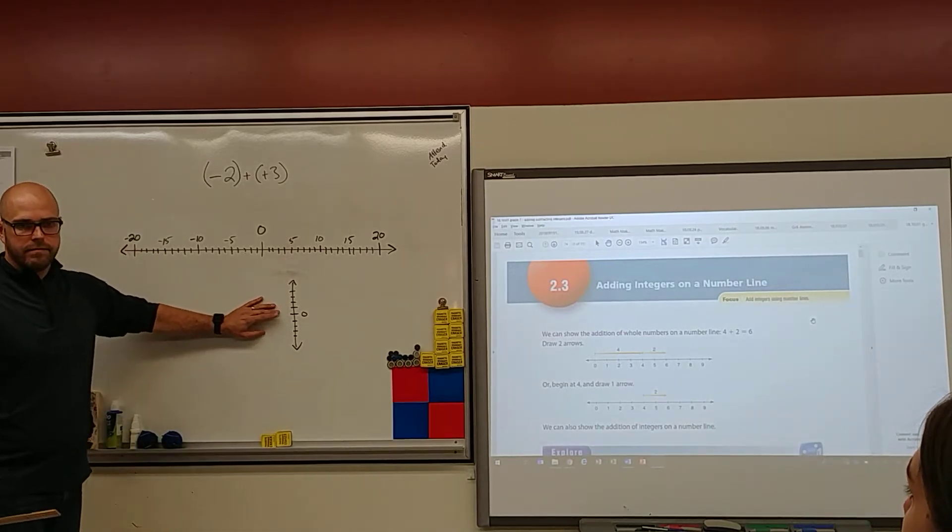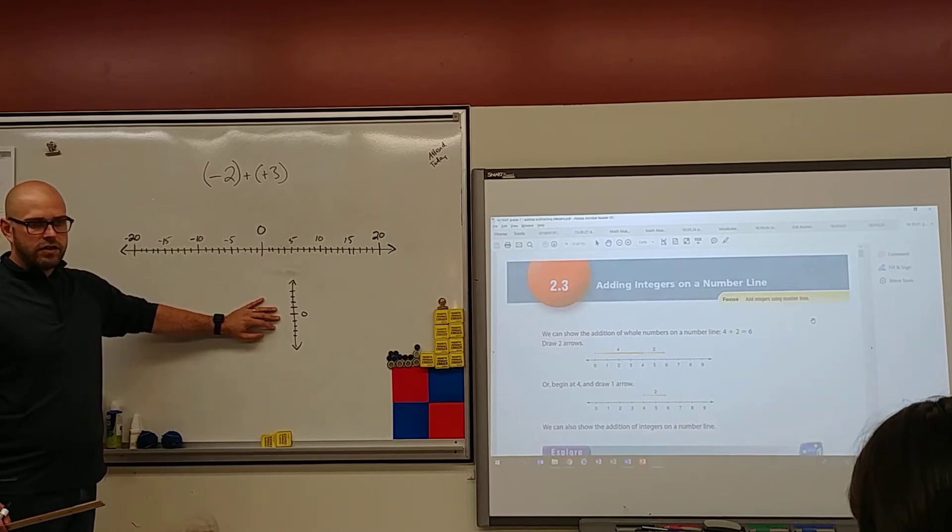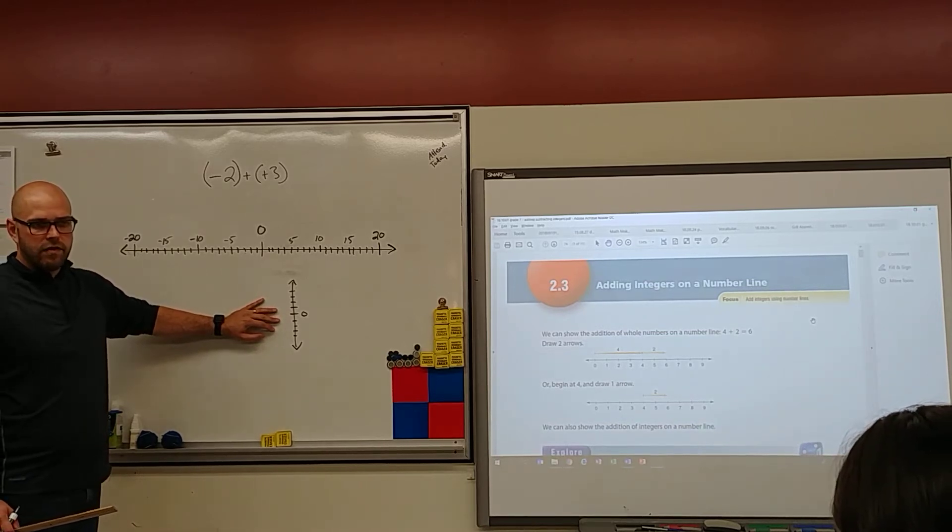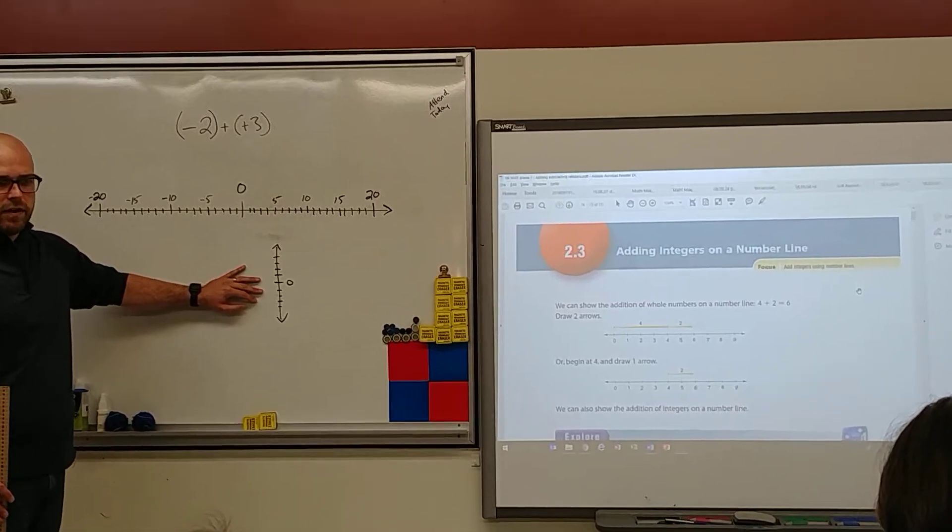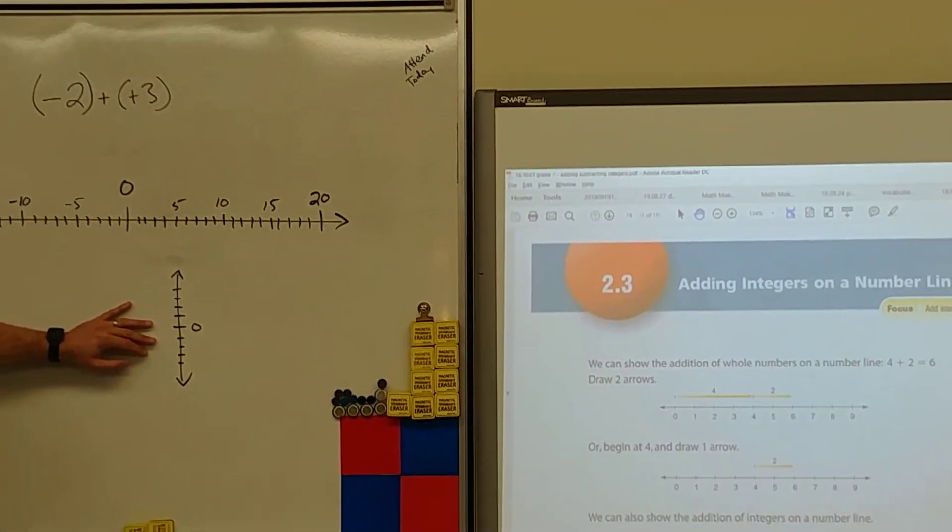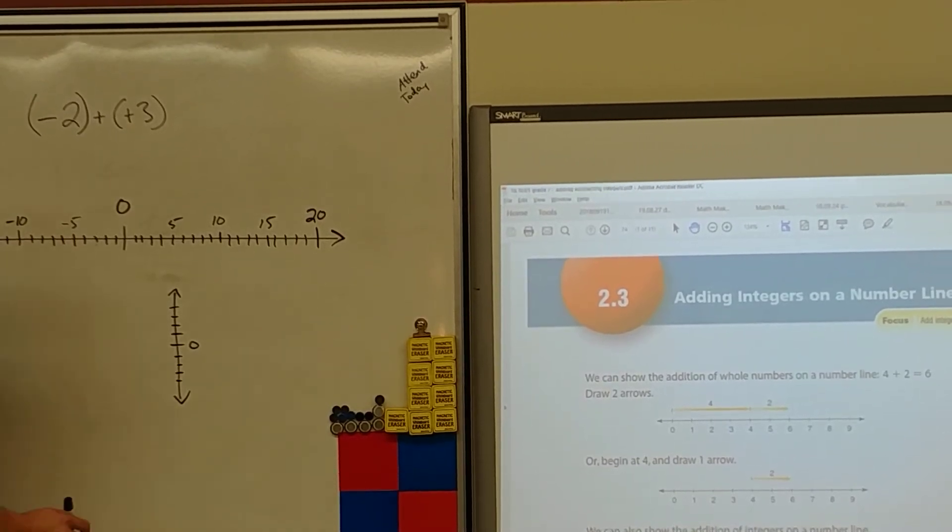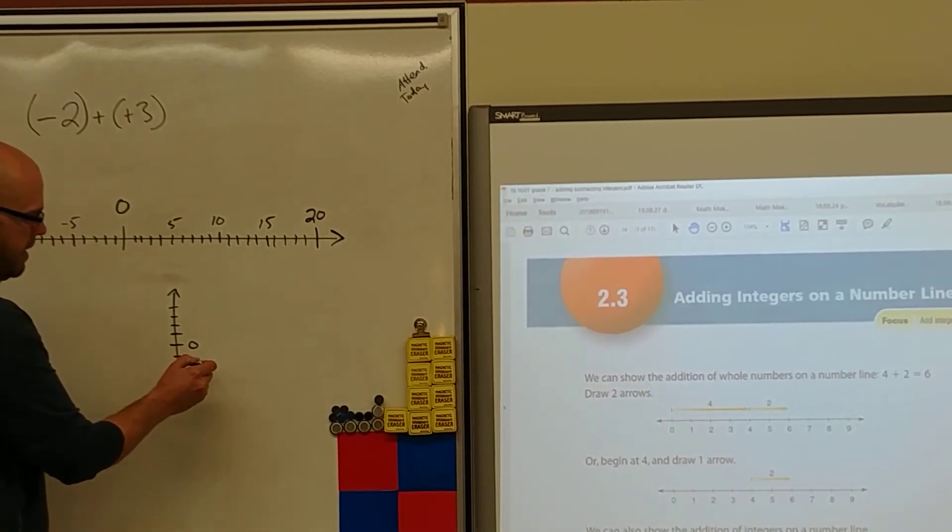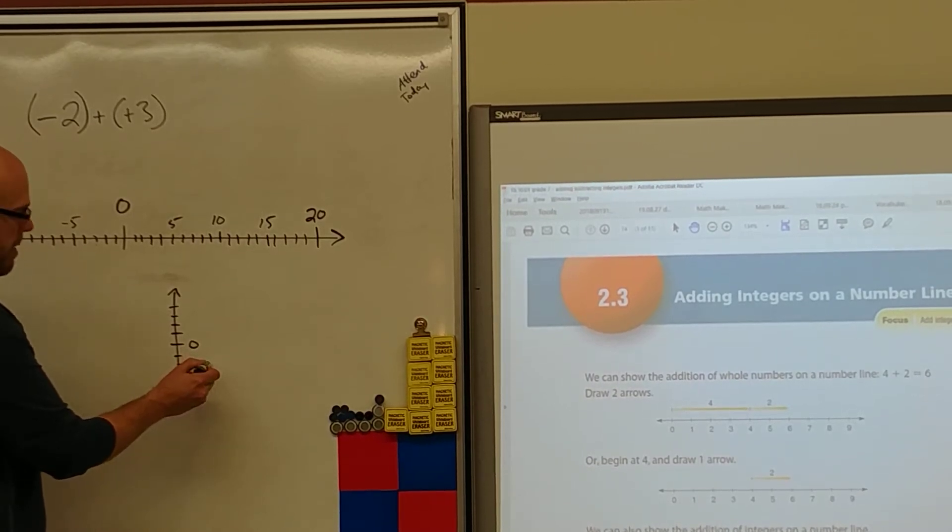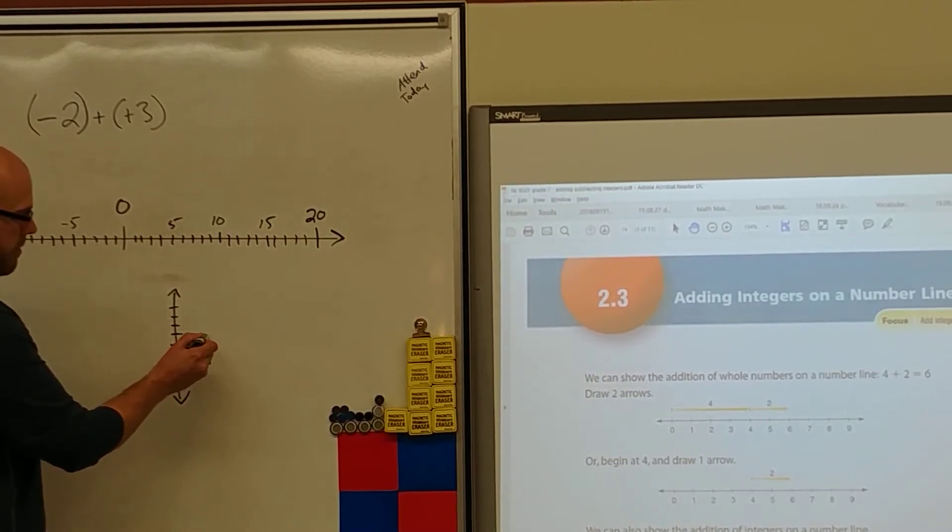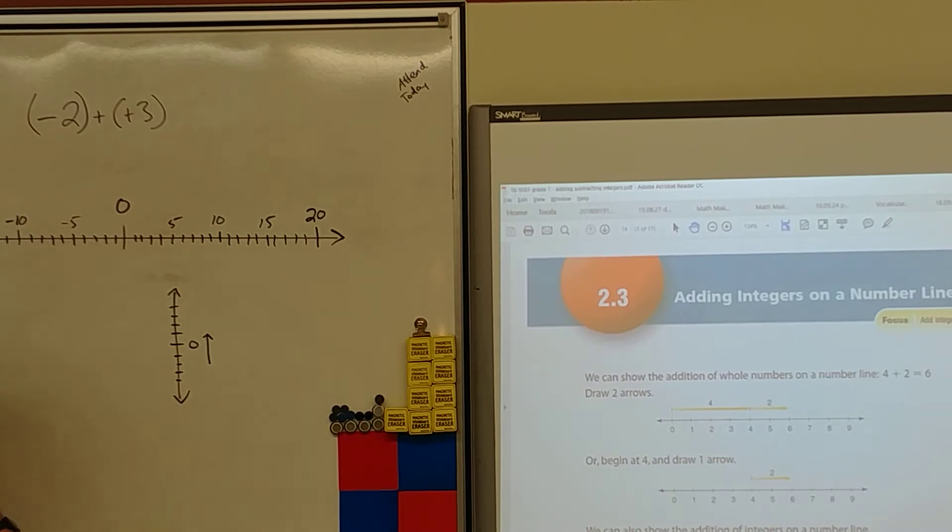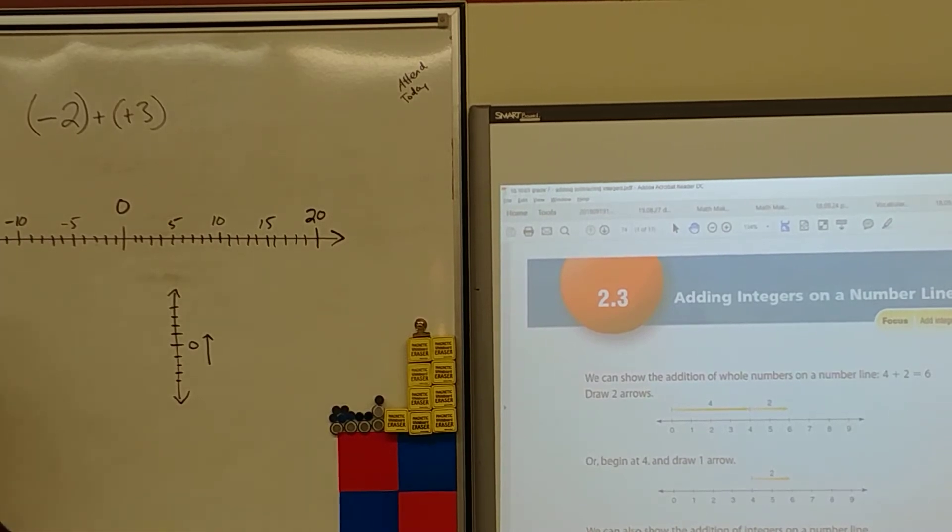Take a look at my thermometer. Whenever I think integers, number lines, I think thermometers. They're just easier. So if I said that it was negative 2 degrees, and then it warmed up by 3 degrees, what temperature is it now? It's warm. It's plus 1.